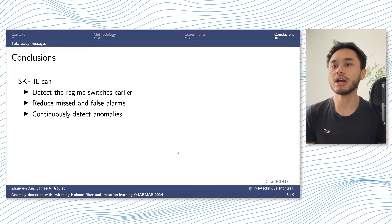To conclude this talk, using switching Kalman filter with imitation learning can detect the region switches much earlier. It can reduce missed and false alarms. And it has the capability to continuously detect multiple anomalies in one time series.